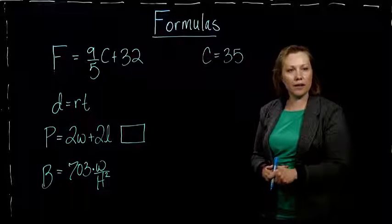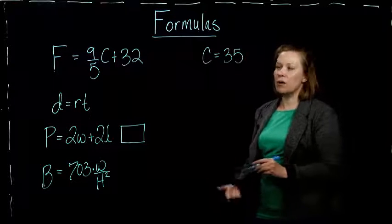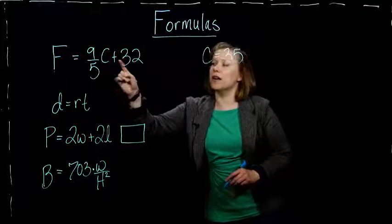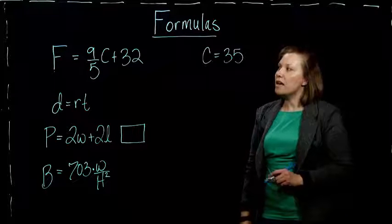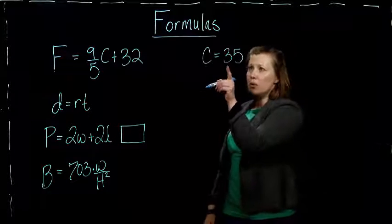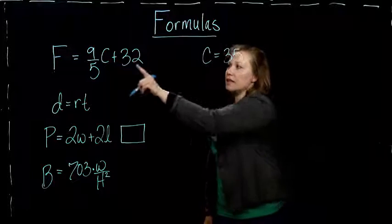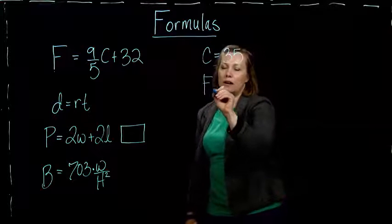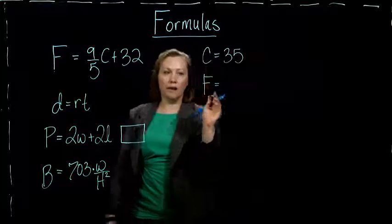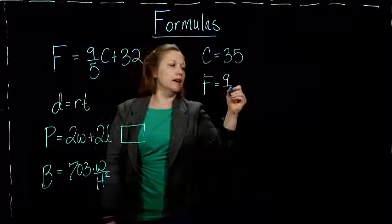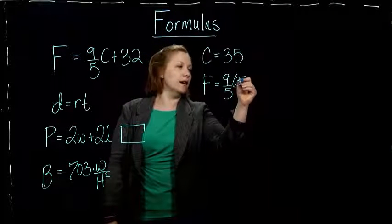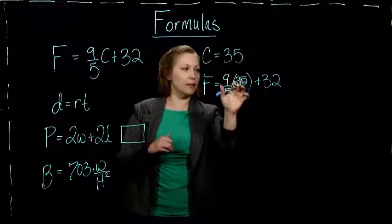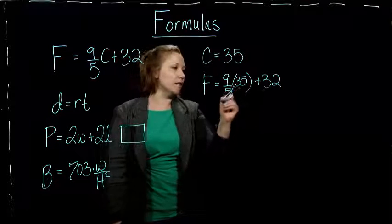And you say, well, I wonder what that is in Fahrenheit. So, what you could do is you can use this formula that relates the Fahrenheit, gives us the Fahrenheit temperature if we have the Celsius temperature. And what we do to evaluate this, we just replace the C in our formula with the 35 that we measured. So, our Fahrenheit temperature would be F equals 9 fifths times 35 plus our 32. Just the exact same formula, all I did was replace the C with the 35. And now I just have to evaluate it.